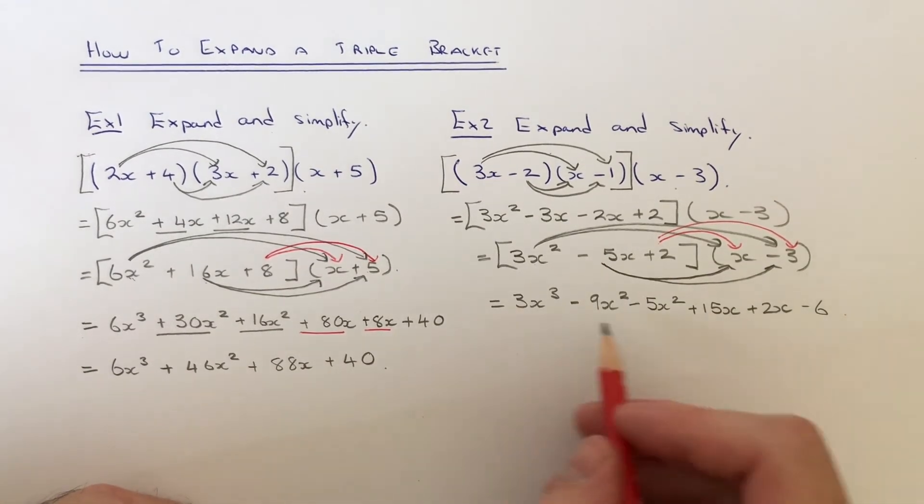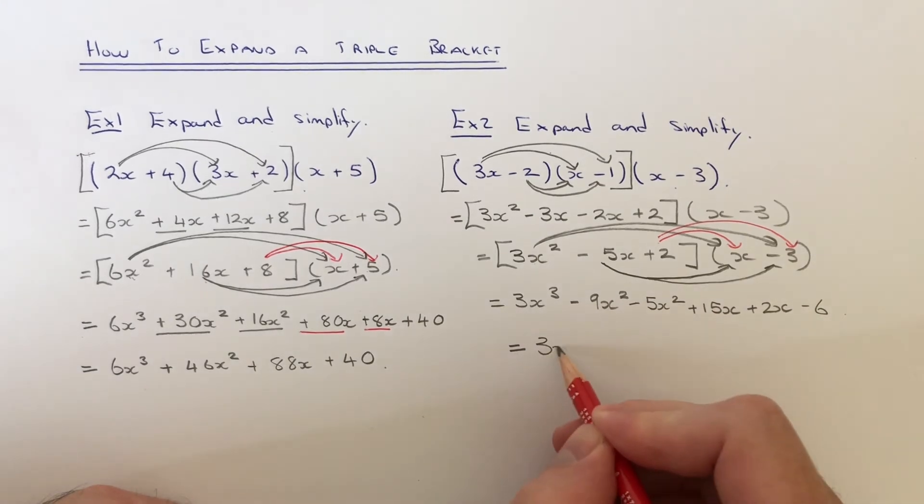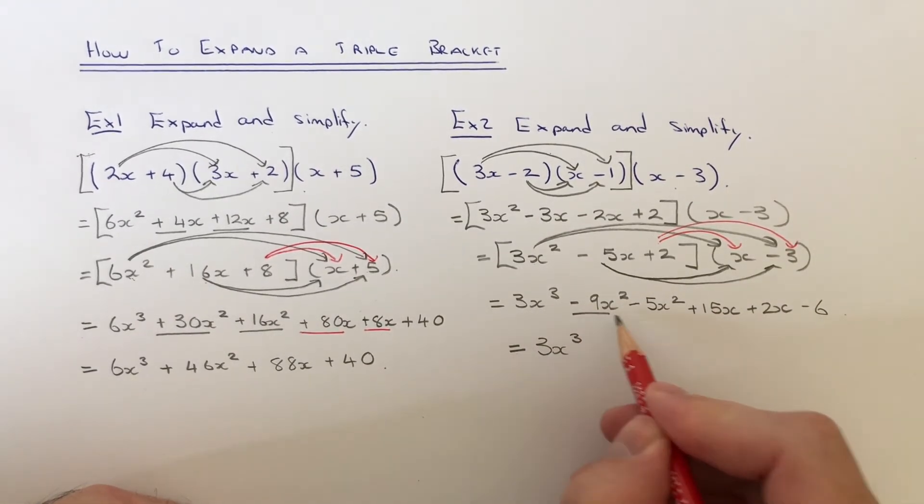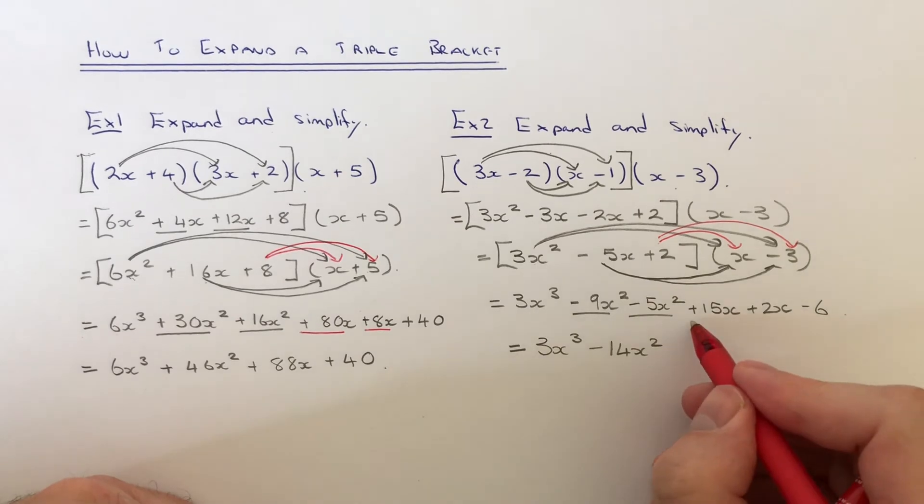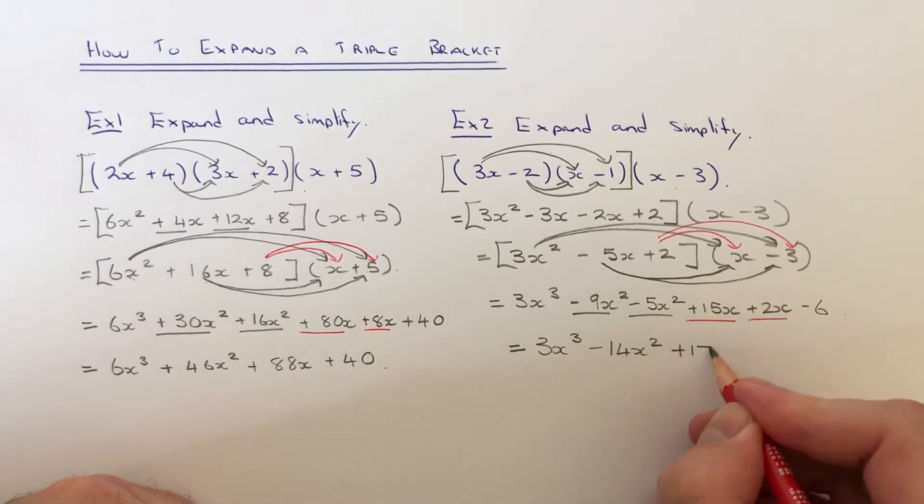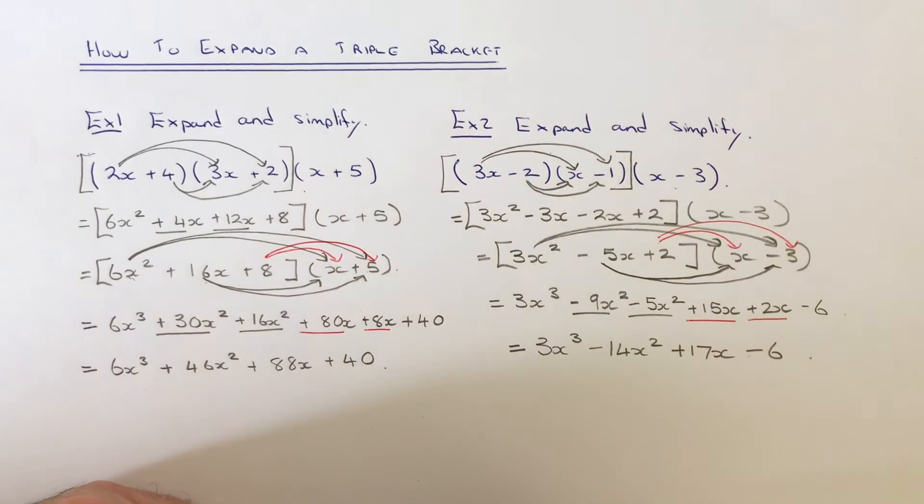So again, let's just simplify this to get our final answer. We can't do anything with the x cubes. Minus 9x squared minus 5x squared is minus 14x squared. 15x add 2x is 17x, and we've just got the minus 6 to put on at the end.